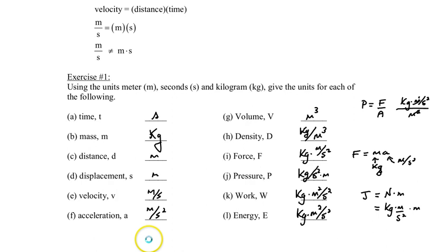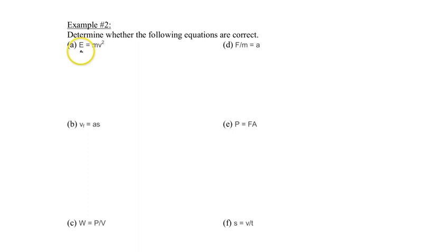So you should be ready to tackle example or exercise two in the back of this worksheet and take a look at this. Now E by the way here would be energy. M is kilograms, mass. And V here will stand for velocity. F here is force. This is mass. This is acceleration.